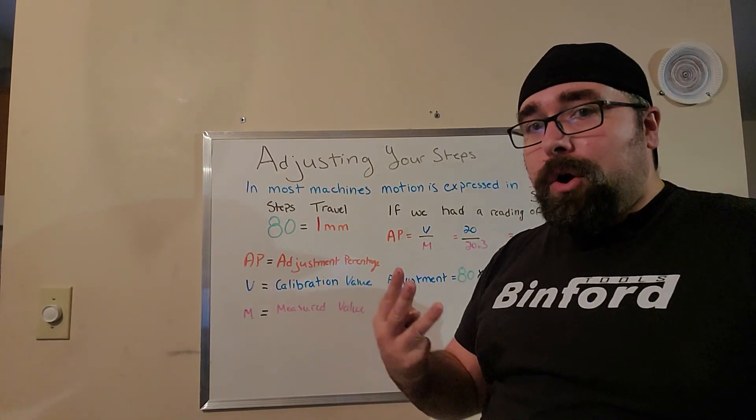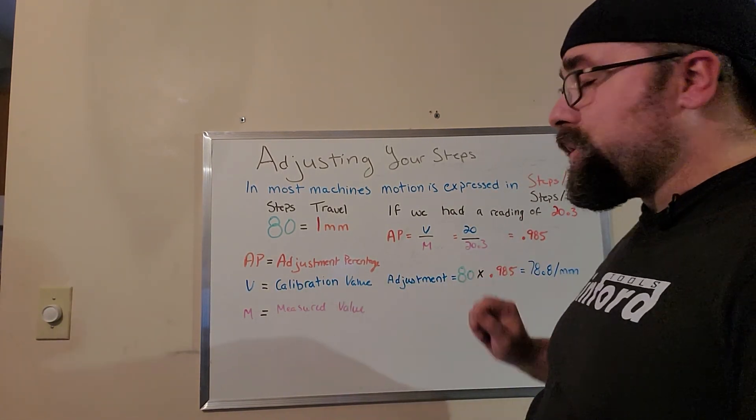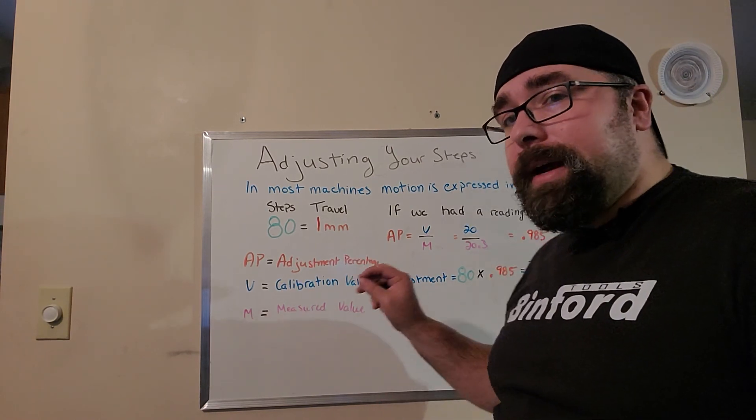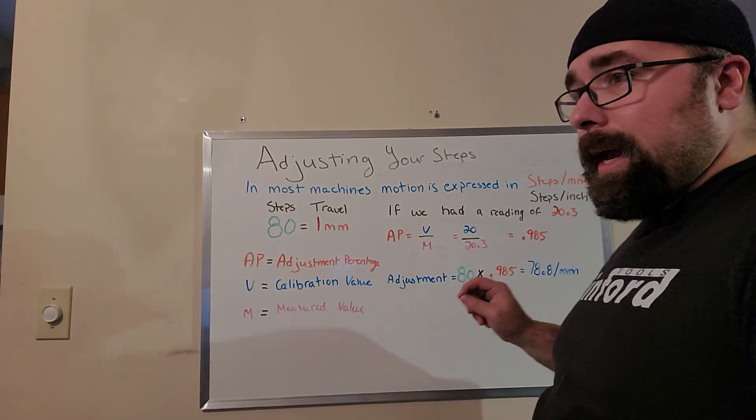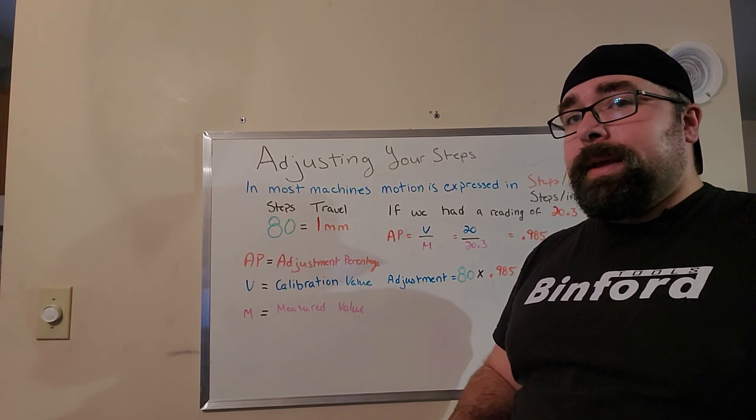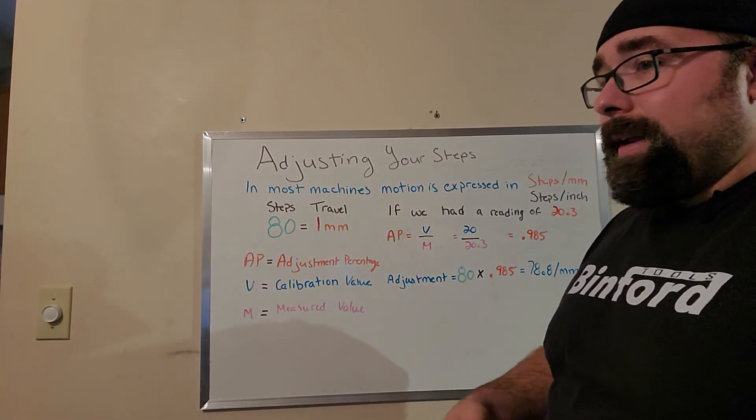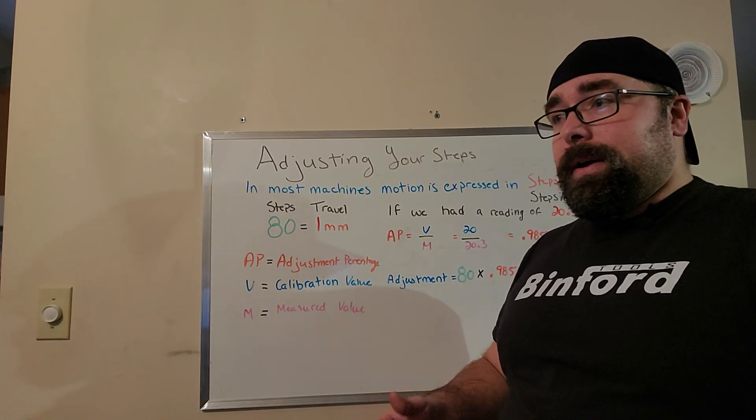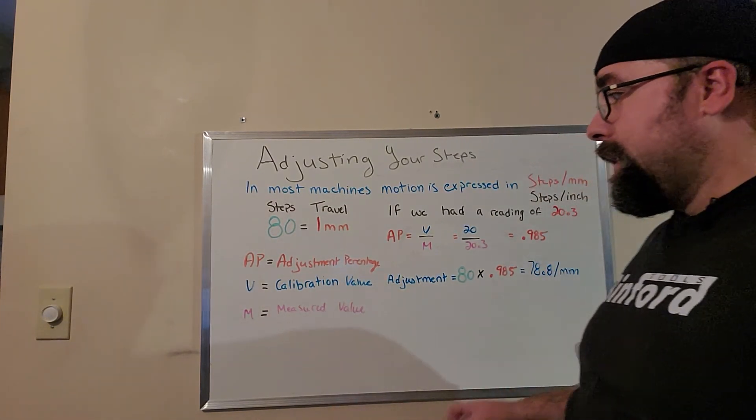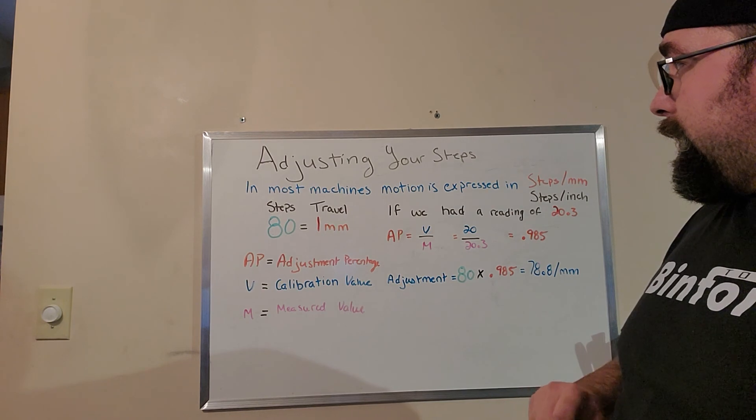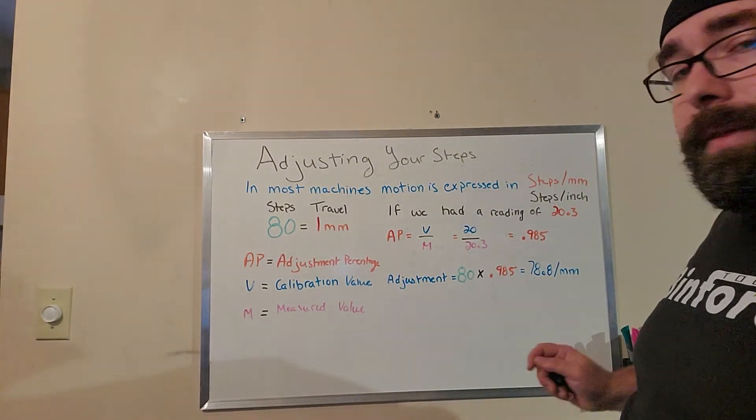Third, always print it three times and make sure that you have a consistent value. And then after you change it, do the print again and make sure that it adjusted the way you wanted it to. The last thing you want to do is to make the adjustment the wrong direction and end up having prints that are even worse than before. And with that being said, that is how to adjust your steps per millimeter.